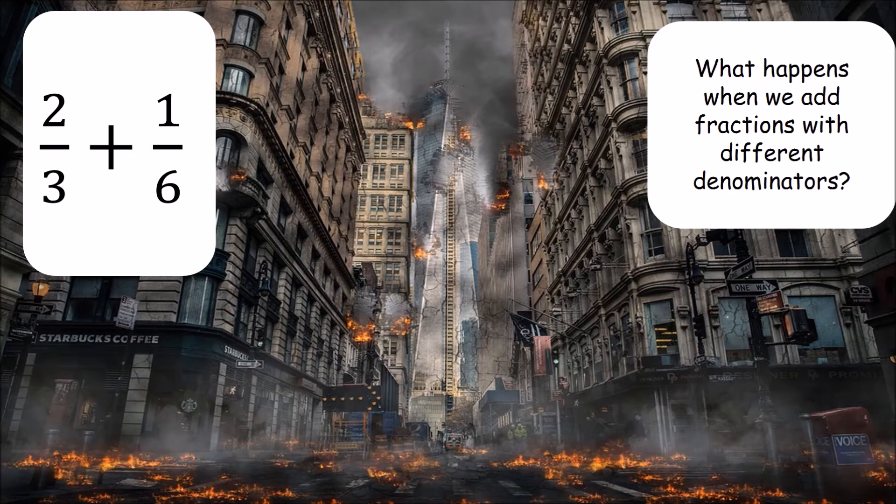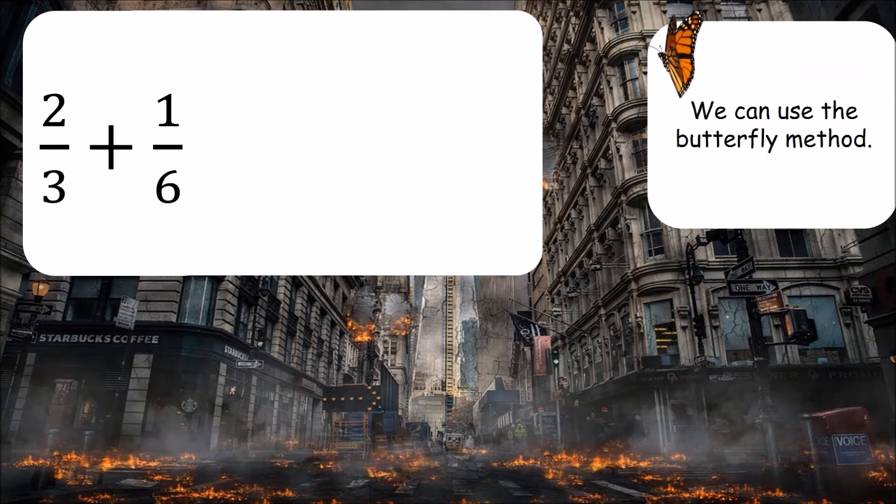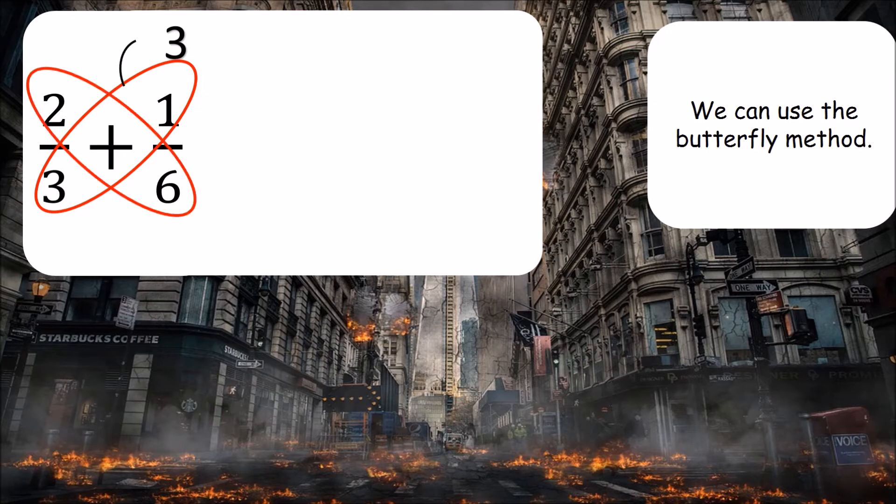But what happens when the denominators are different? Well we can use something called the butterfly method and it's really simple. What we do is we cross multiply the denominator by the numerator. So in this case we've got three times one and three times one is three. Then we do the same with the opposite side. Six times two and six times two is twelve. Now we always put the answer above our numerator. So we know that that's the answer. Then to find the denominator, we do three times six. Now three times six is eighteen.